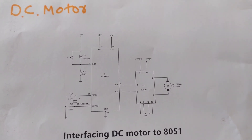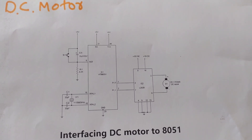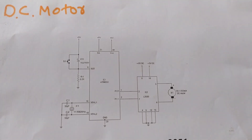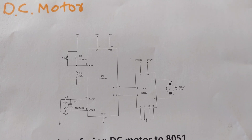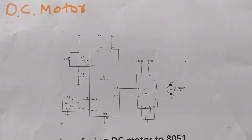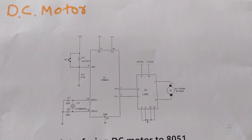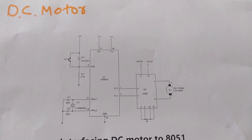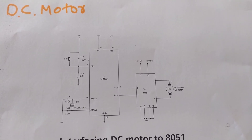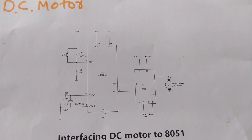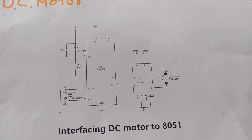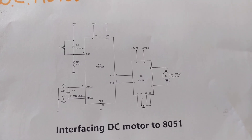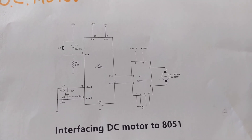DC motor — interfacing DC motor with 8051 microcontroller. A DC motor translates electric pulses into mechanical movements. The DC motor has positive and negative leads. Connecting them to a DC voltage source moves the motor in one direction. According to the polarity of the power supply, the DC motor will move in opposite directions or normal direction.